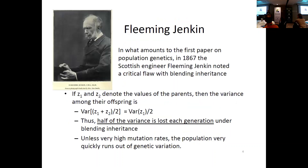The problem with blending inheritance was identified in what is essentially the first paper in population genetics — a book review by Fleming Jenkin, a Scottish engineer who among other things invented the cable car. He noted that if two parents contribute equally, the variation of their average is half the variation of a single value. With blending inheritance, the variation gets cut in half each generation, and you very quickly run out of genetic variation. So Darwin's mechanism of natural selection seemed reasonable, but the heritable part was not well worked out.